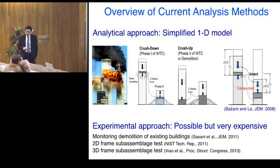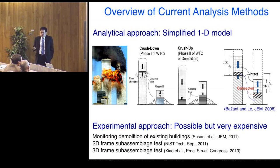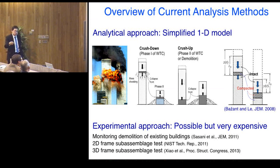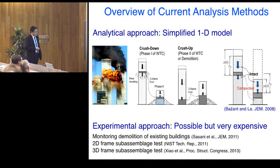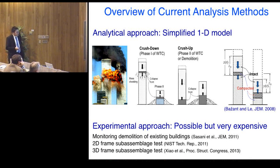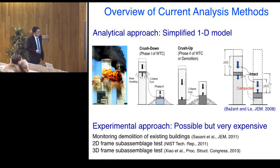The experimental approach is possible but extremely expensive. In the US, experimental work on progressive collapse typically involves monitoring controlled demolition of unwanted buildings — Sassani's group at Northeastern University looks for buildings scheduled for demolition, places explosives, and observes collapse behavior. In laboratory-controlled tests, I'm only aware of one test done by NIST in 2011, a two-dimensional frame sub-assemblage test — a very neat experiment, but large-scale and very expensive. Recently in China, researchers have started three-dimensional frame assembly tests to observe collapse behavior including flat slab effects, but such tests remain rare due to cost.